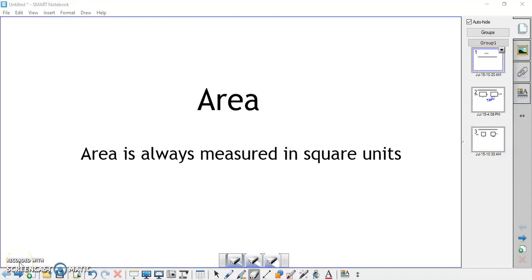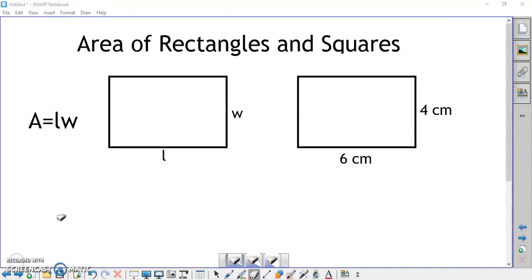We are going to continue our discussion of area by finding the area of rectangles and squares. The formula for the area of a rectangle is A equals LW. Area equals length times width.